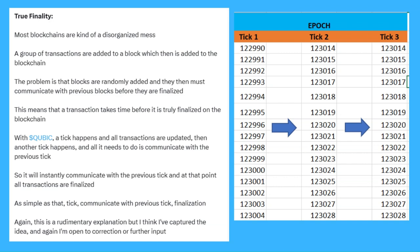Better networks now, like CAS, might achieve finality in a few seconds. But it still takes time before a transaction is truly finalized on the blockchain. With Qubik, a tick happens and all transactions are updated. Then another tick happens, and all it does is communicate with the previous tick. So we've got tick one, then tick two happens and straight away it communicates with tick one — finalized. Same with tick three — instant finalization. It's really simple.